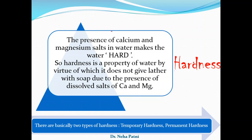Today I will discuss a property of water known as hardness of water. In the previous video I discussed the basic sources of water and the impurities which could possibly be present. Based on that, if those impurities are present they may render a property called hardness to the water. Hardness is basically a property of water by virtue of which it does not give lather with soap properly.